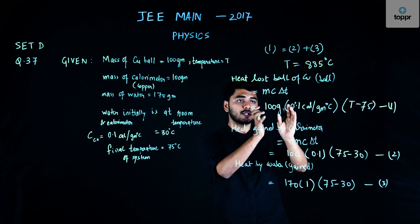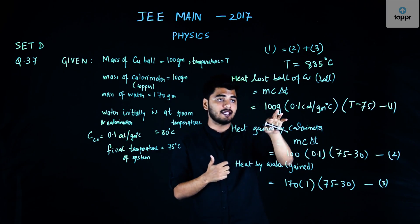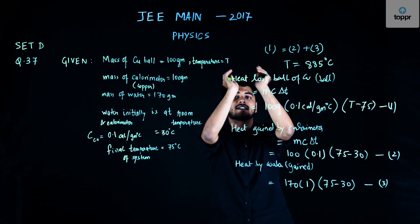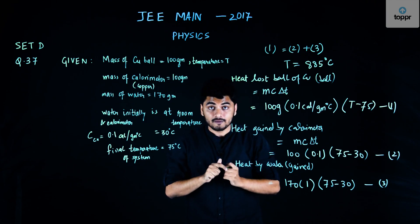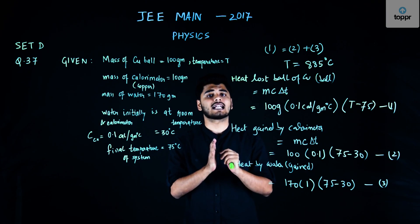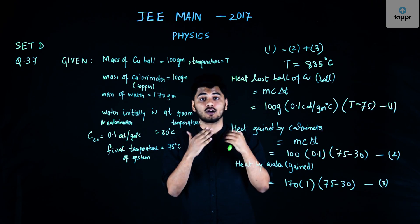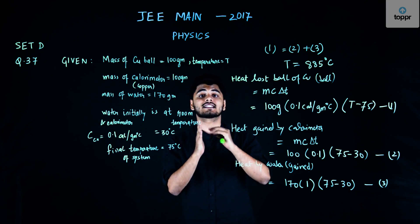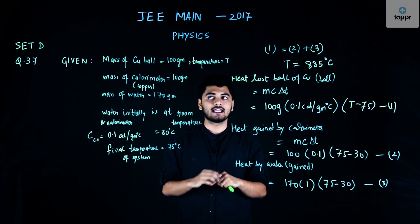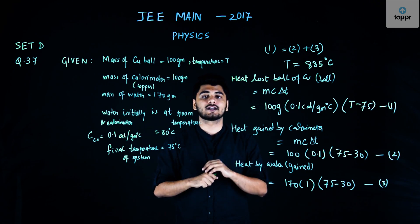One thing to note: since all units were in the same system — calories, grams, and degrees Celsius — there was no need to convert to kilograms or any other units. We could directly add the two equations. The two key principles used were: first, conservation of heat energy; and second, identifying which bodies lost heat and which gained heat by observing the changes in temperature. Water and the calorimeter rose from 30 to 75 degrees Celsius, so they gained heat, meaning the copper ball must have lost heat.